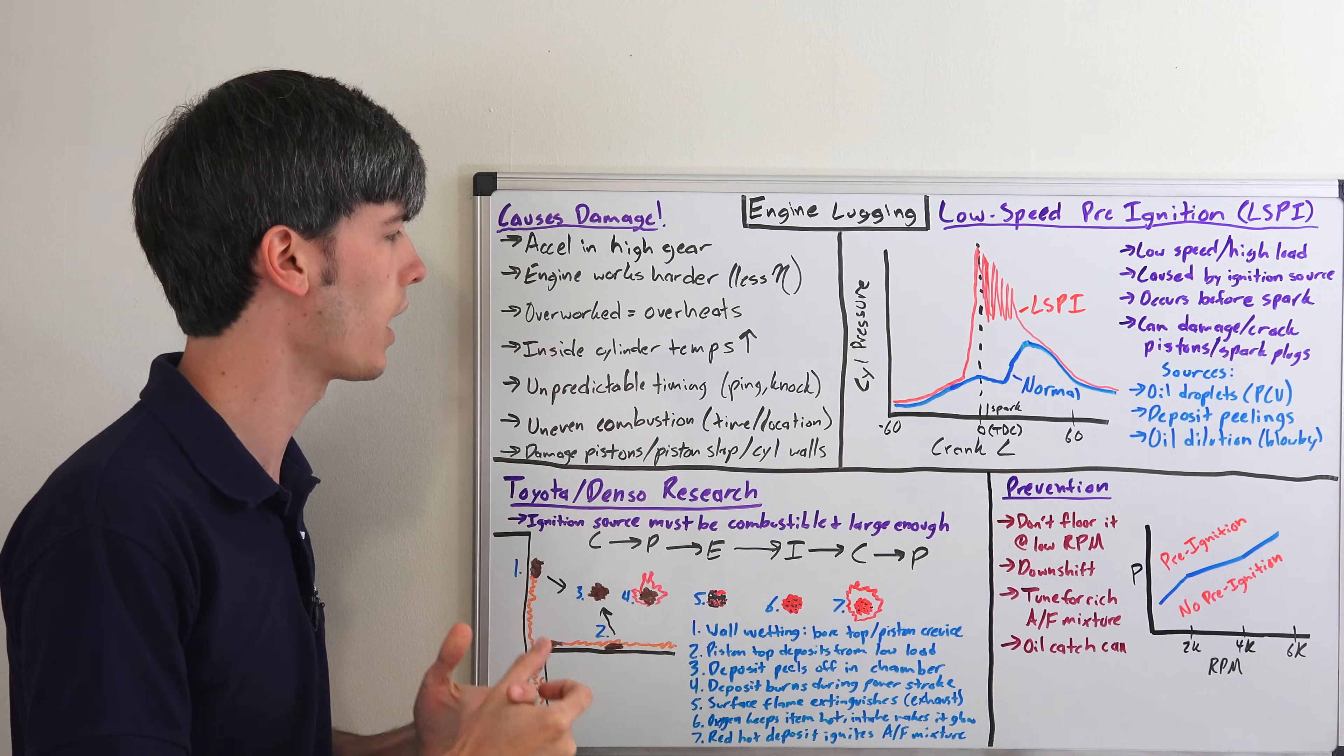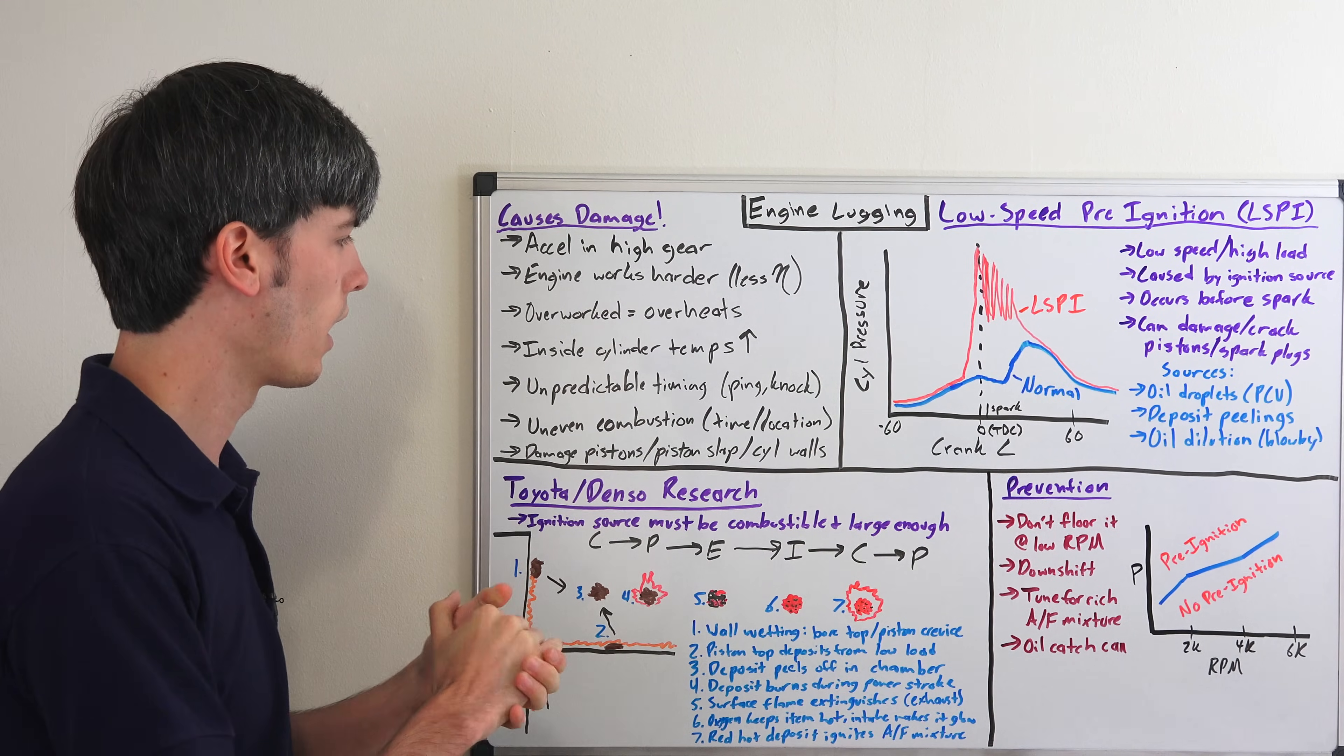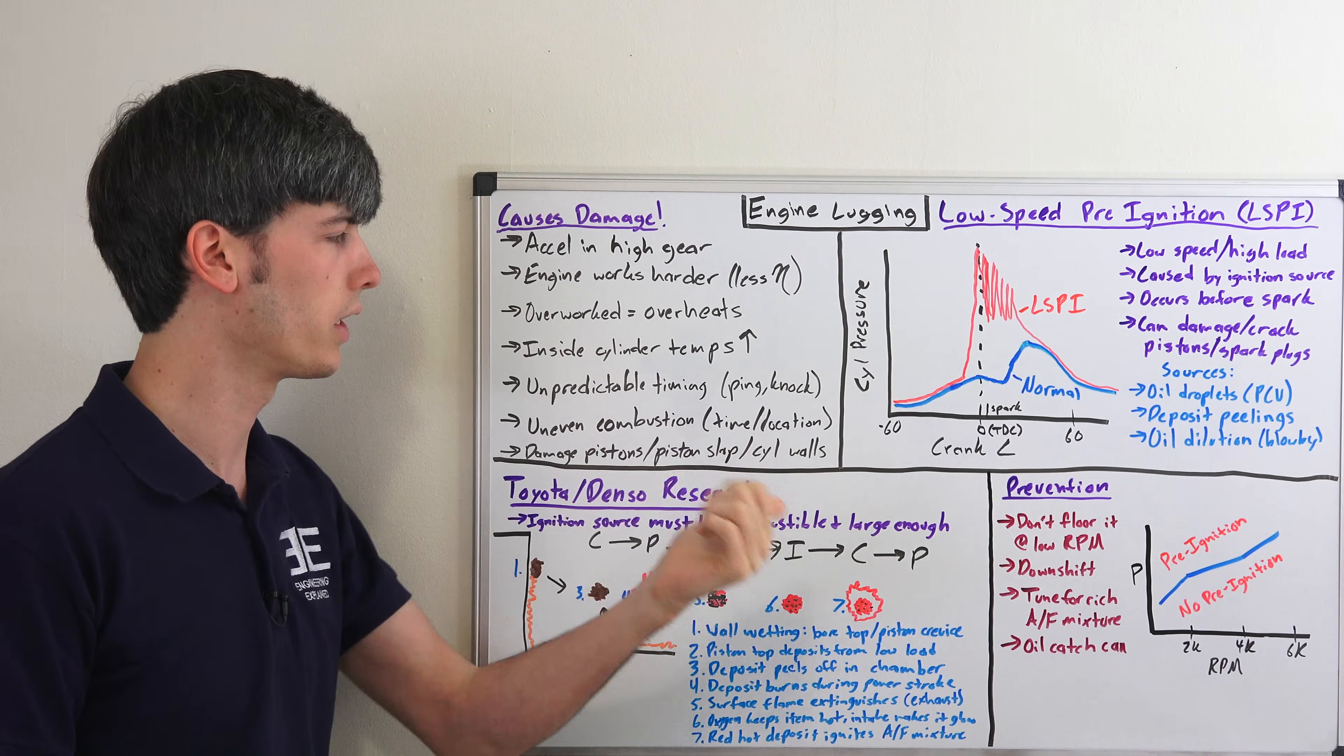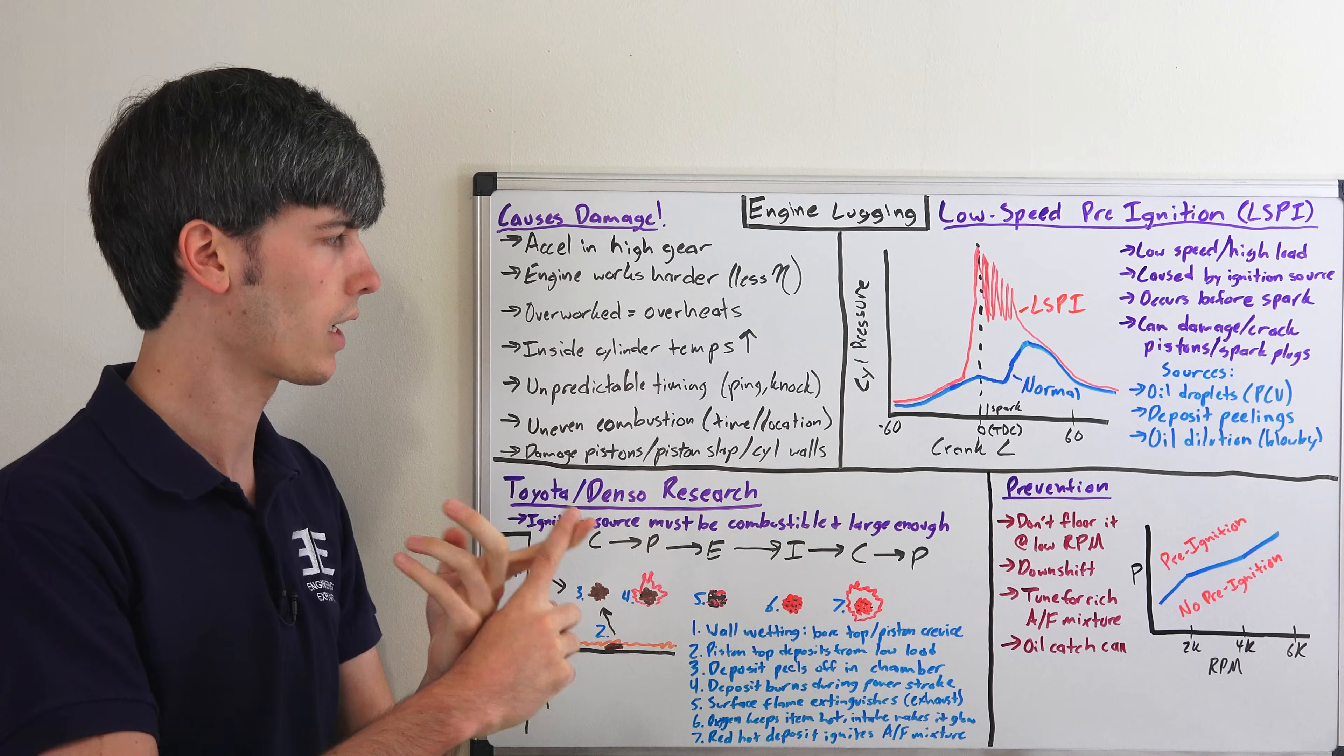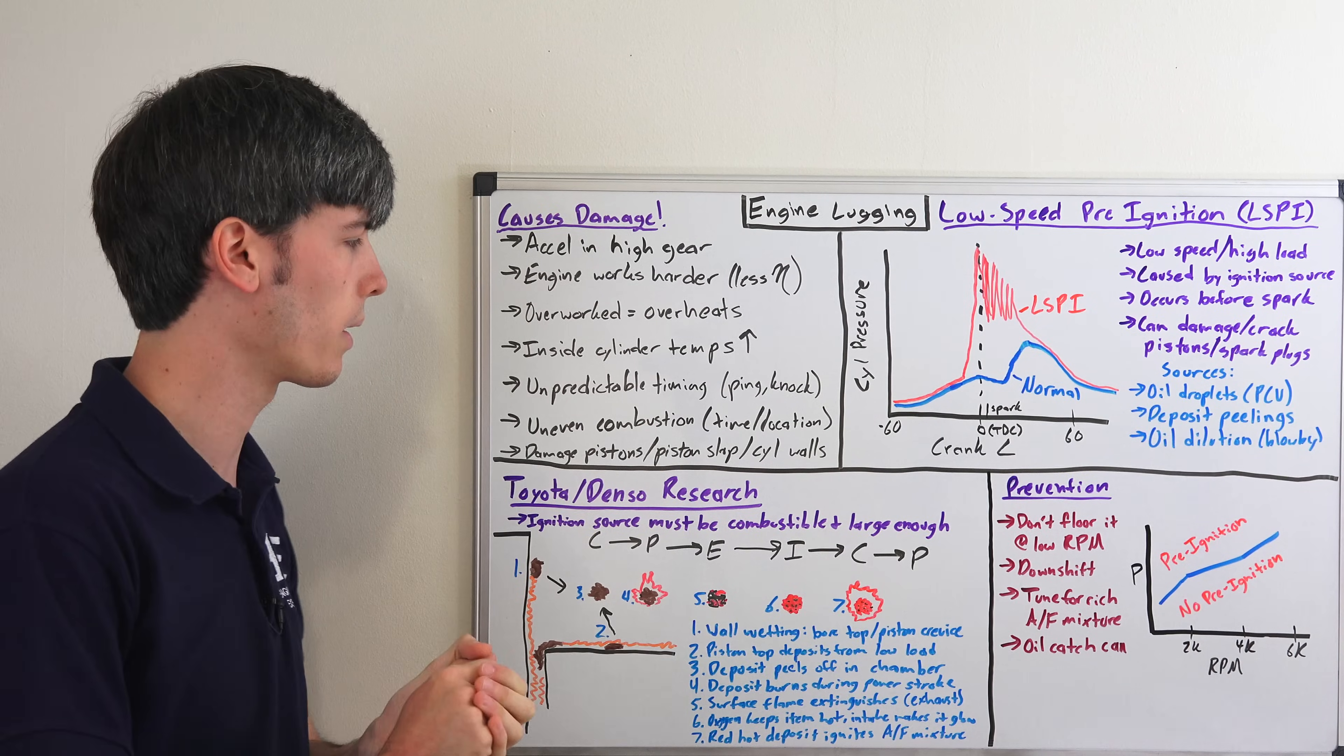Once you have higher temperatures inside your cylinders, you start to get unpredictable timing. You can get ping, you can get knock, if you have hot spots somewhere in there which can mess up your timing. This can cause uneven combustion, not only in timing but also the location if a deposit somewhere causes combustion to occur.